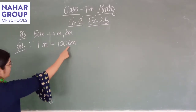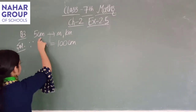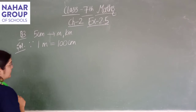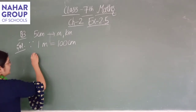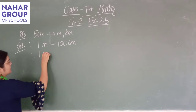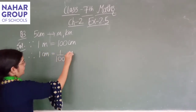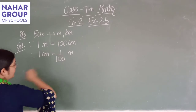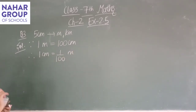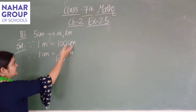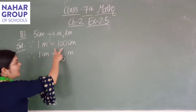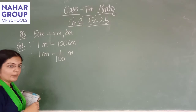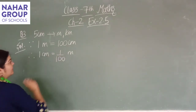Students, हमें meter से cm में नहीं करना है, हमें cm से meter में करना है — means हमें इसका reverse process करना है। अगर 1 meter में 100 cm होते हैं, तो 1 cm में 1 upon 100 meter होंगे। अगर meter से cm में convert करने के लिए 100 से multiply करते हैं, तो cm से meter में convert करने के लिए 100 से divide करेंगे। So 1 cm equals to 1/100 meter.